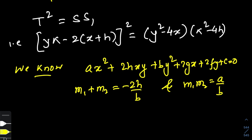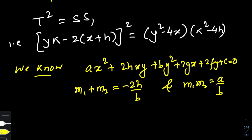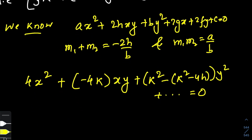I have to first write down this equation in terms of x², xy, y² terms. The coefficient of x² will be 4. The coefficient of xy will be -4k. The coefficient of y² will come from k² on the left side and on the right side you have -(k² - 4h), which gives 4h. Rest of the terms we need not write.